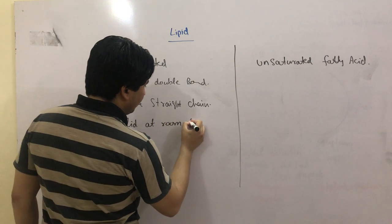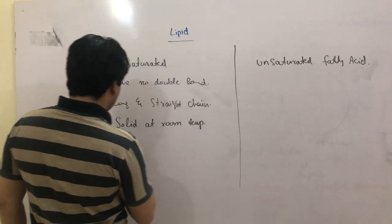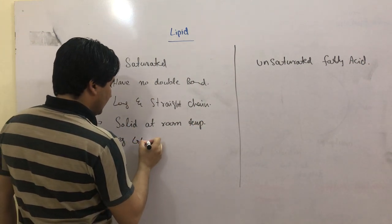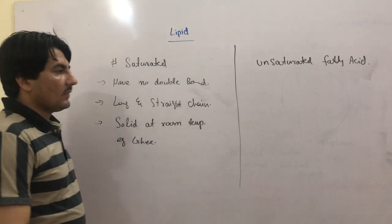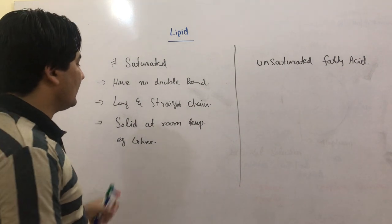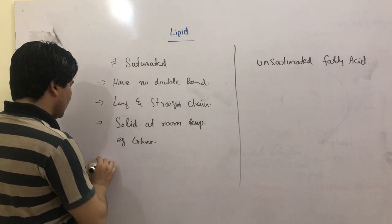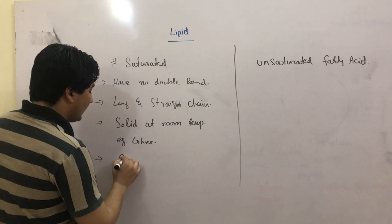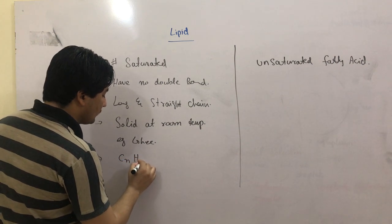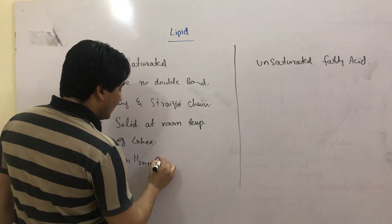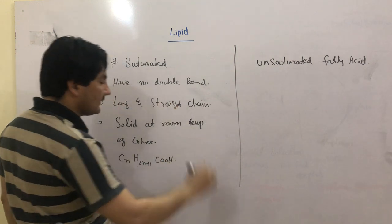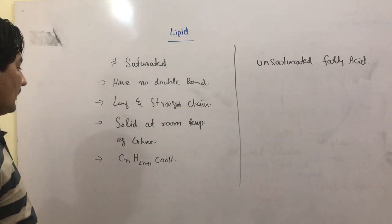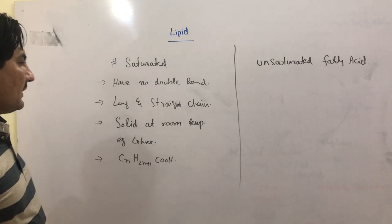For example, chicken fat. They are solid at room temperature. The general formula is C_n H_{2n+1} COOH.